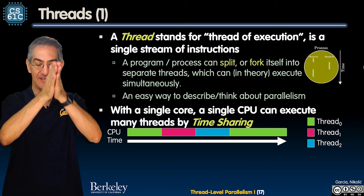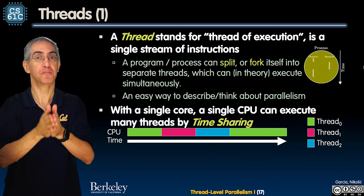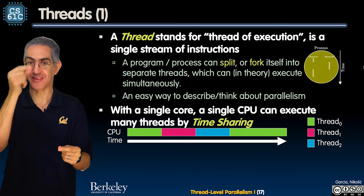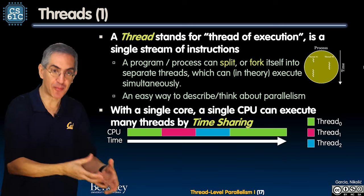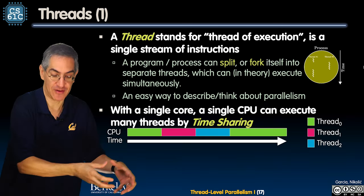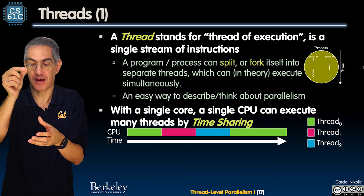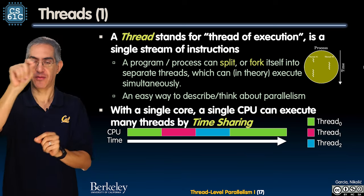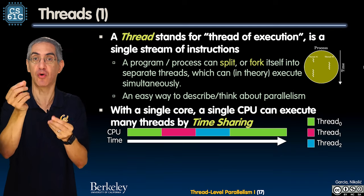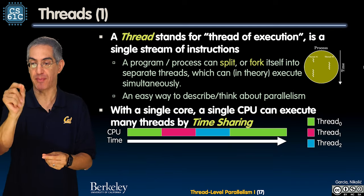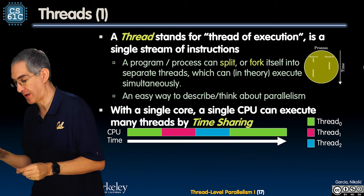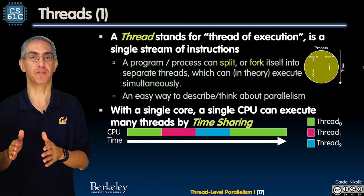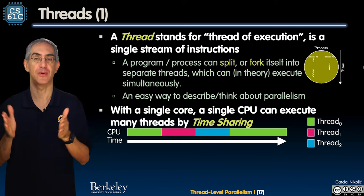A thread is a single stream of instructions. Think of an old-school program with a single PC. You load in a program — an `a.out` — and you're running it. There's some control flow: you make a function call, it goes there, then it comes back. It's a single thread of execution. That's a thread.